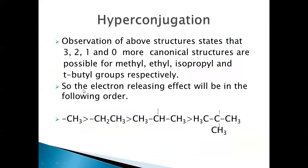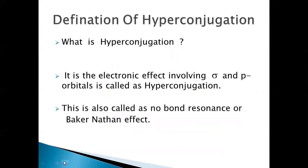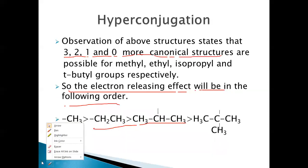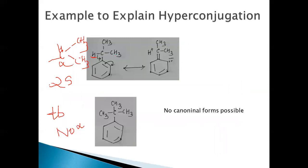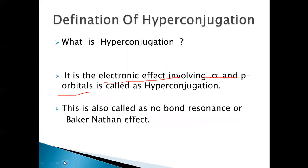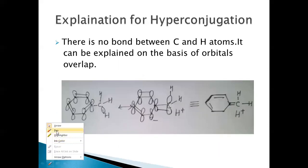From the above observations, the number of canonical structures is decreasing, and the electron-releasing effect is different from that of the inductive effect — this is what hyperconjugation is. Hyperconjugation is defined as an electronic effect involving sigma electrons and p orbitals participating in resonance. It is also called the Baker–Nathan effect or no-bond resonance.